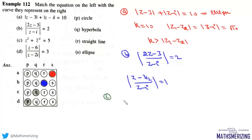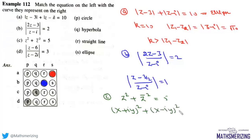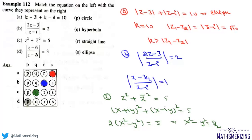For equation C: z² + z̄² = 5. Writing z = x + iy and z̄ = x - iy, we get (x+iy)² + (x-iy)² = 5, which simplifies to 2x² - 2y² = 5, or x² - y² = 5/2 — a hyperbola. So C matches with Q. For equation D: |z - z₁| / |z - z₂| = 3, since this ratio is not equal to 1, the locus is a circle (Apollonius circle). So D matches with P. That is the answer to this question.